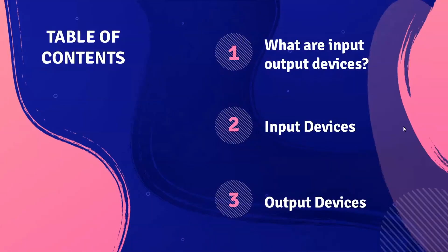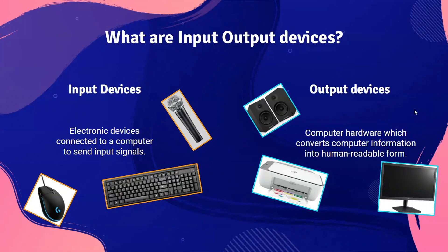In this video, we'll be talking about input devices and in the second part of the video, we'll be talking about output devices. Input devices are basically devices which get an input from the user, and output devices are devices which show an output to the user. Examples of input devices include mouse, keyboard, camera, touch screens, and more. If you are seeing this video on your phone, then the display is an output device; if on a computer, then a monitor.